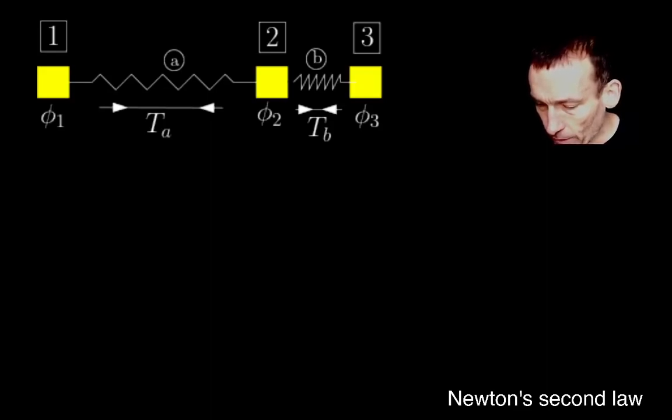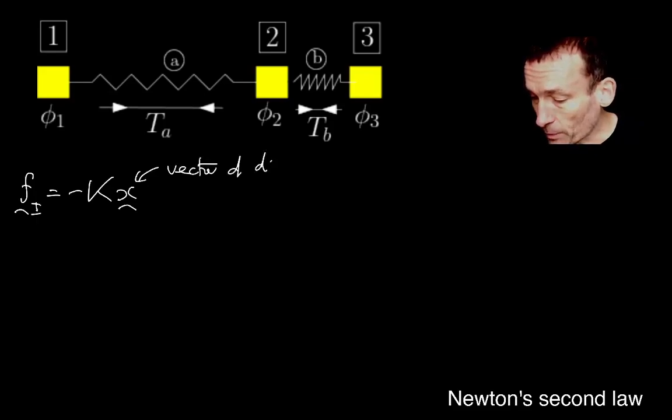And remember, I denoted those by this vector fi, and it was minus the weighted Laplacian times x, where x here was the vector of displacements from equilibrium.